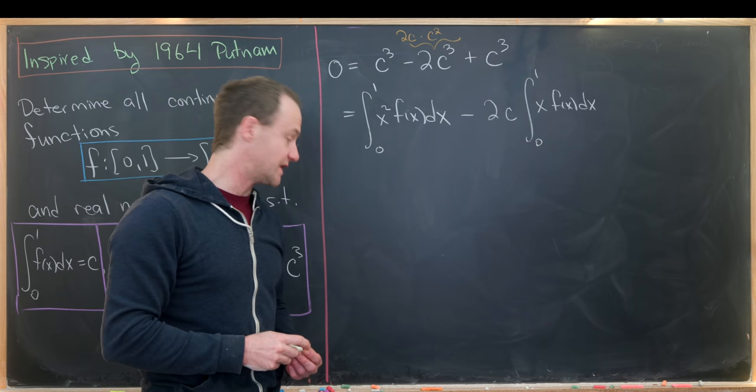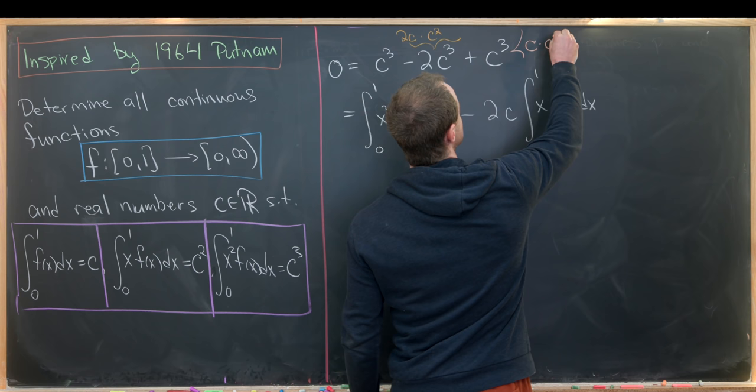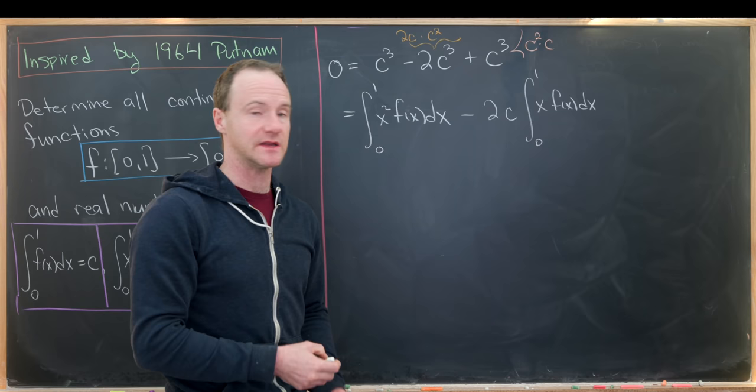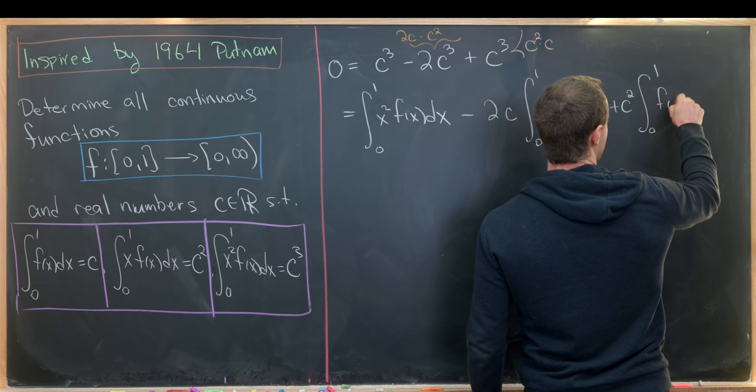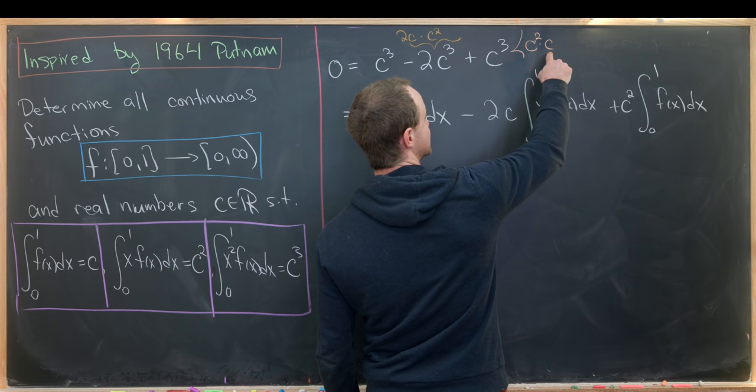And then for this last one, we can do something similar. So we can take this c³ and rewrite it as c times c², or maybe c² times c. And then we have this as plus c², and then the integral between 0 and 1 of f(x)dx, where I've replaced the c with that integral.